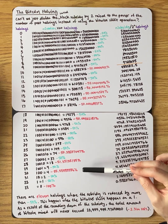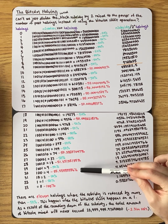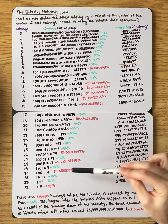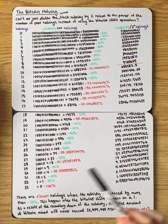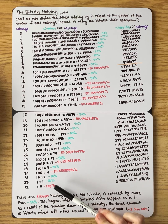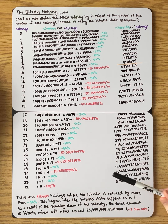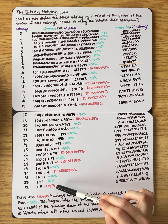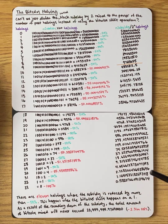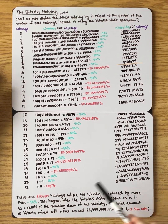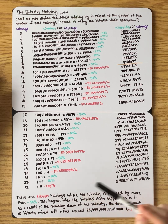The last couple of halvings are the most interesting, because now we're starting to see reductions that are fairly substantially more than 50 percent. In one case it's minus 55.5555 percent — going from nine satoshis to four on the 30th halving. And then the last one, of course, when we go from one satoshi to zero — that's a 100 percent reduction in subsidy. So the last halving isn't really a halving at all; the subsidy goes completely to zero, a full 100 percent reduction.